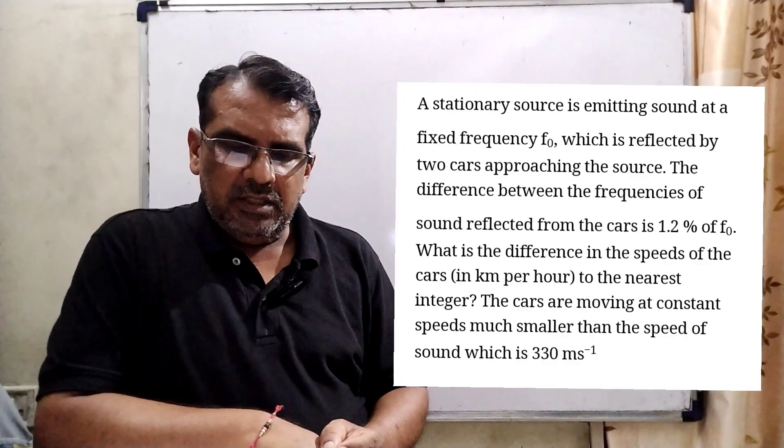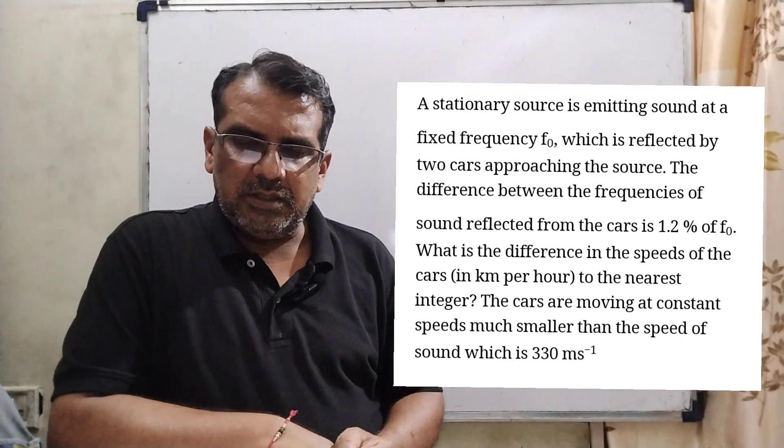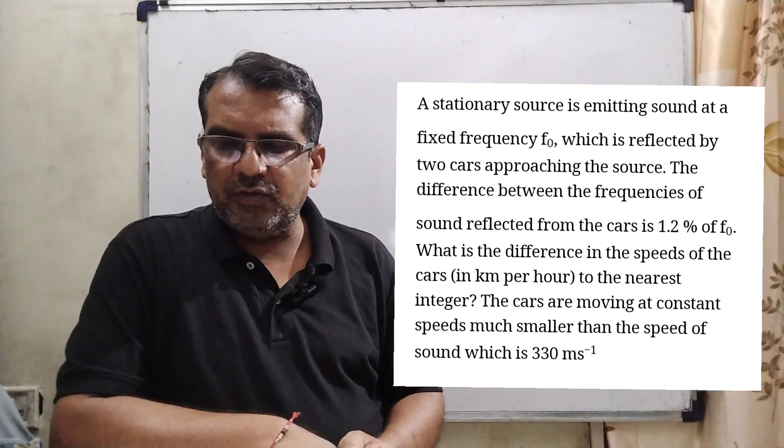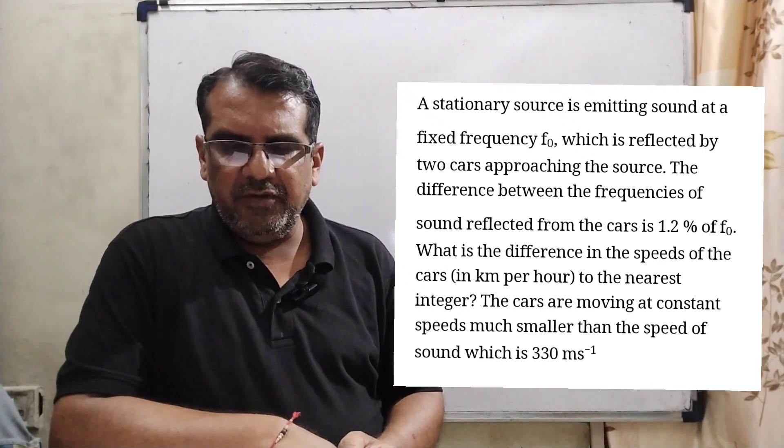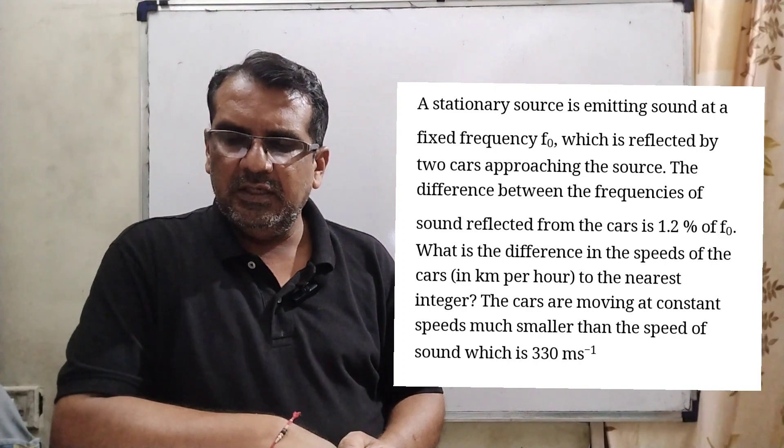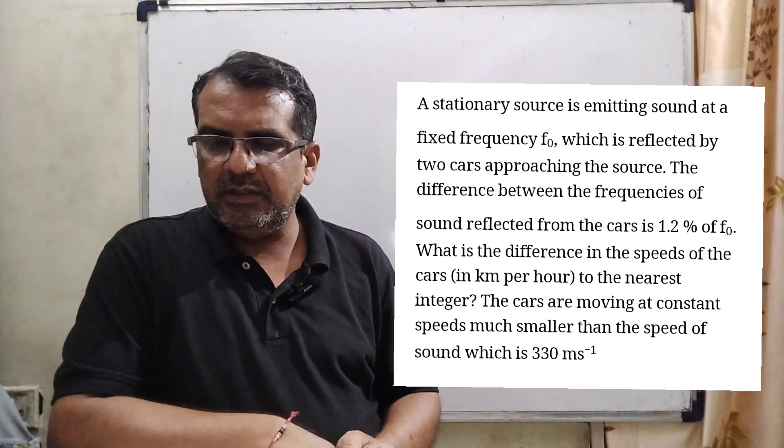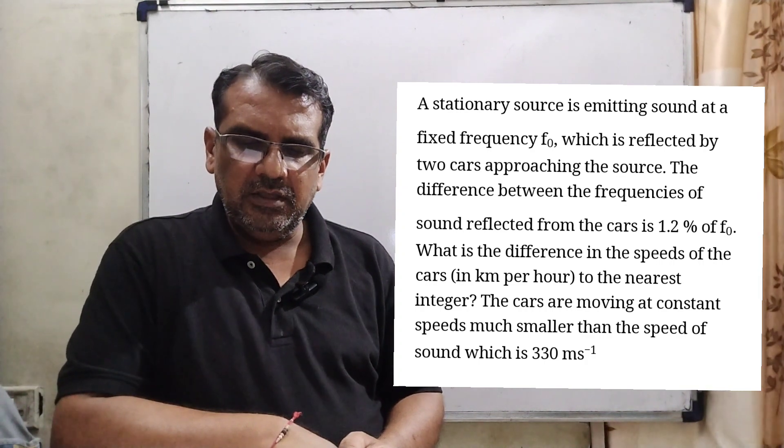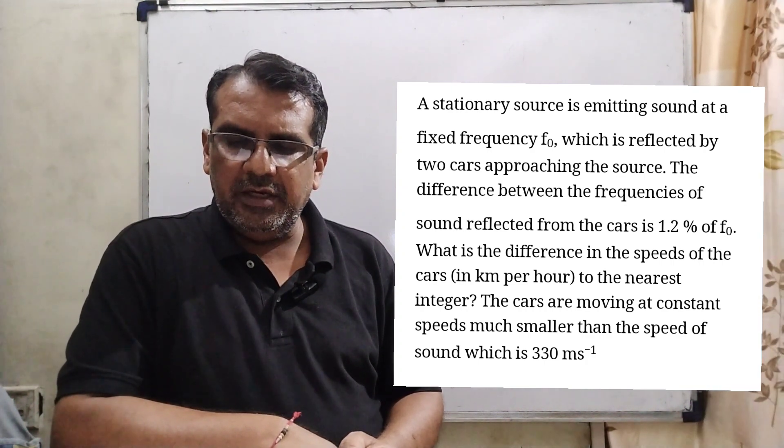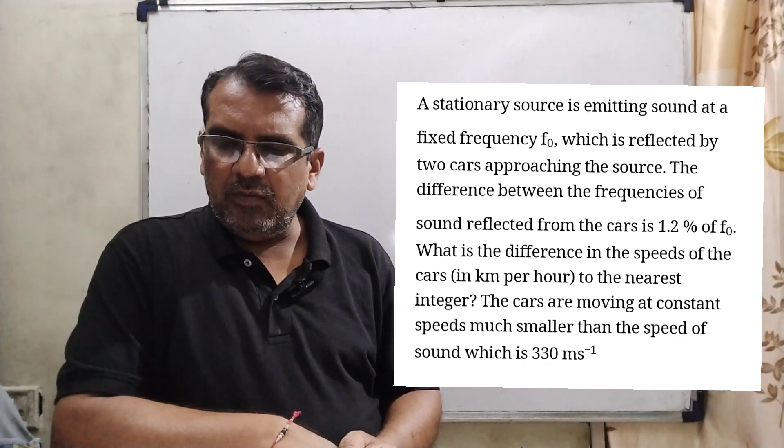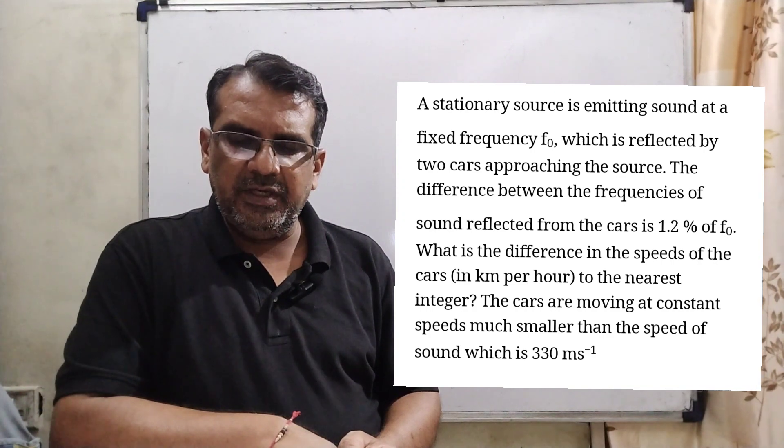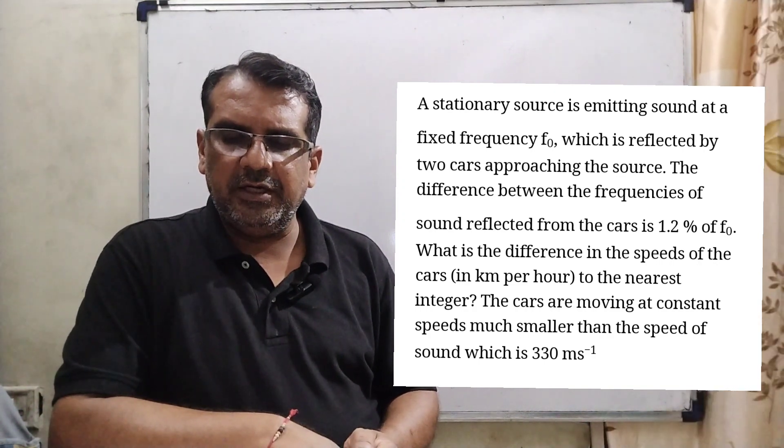Now here is the question. A stationary source is emitting sound at a fixed frequency F0, which is reflected by two cars approaching the source. The differences between the frequencies of sound reflected from the cars is 1.2% of F0. What is the difference in the speed of the cars in km per hour to the nearest integer? The cars are moving at constant speeds much smaller than the speed of sound, which is 330 meter per second.